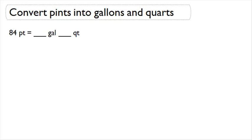Now let's talk about how to convert pints into gallons and quarts. The question says 84 pints is equal to how many gallons and how many quarts.